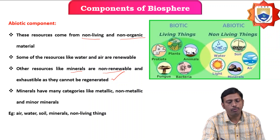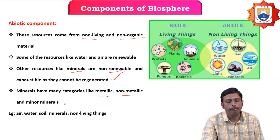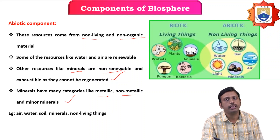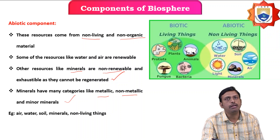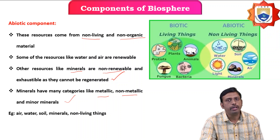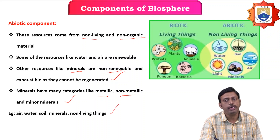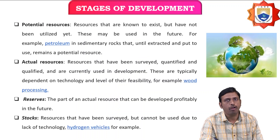The resources which are regenerated are renewable resources, and resources which are not regenerated are non-renewable resources. Minerals have different categories: metallic minerals, non-metallic minerals, and minor minerals. Examples for abiotic components are air, water, soil, minerals, and other non-living things.